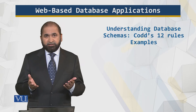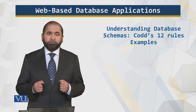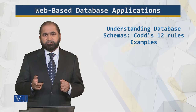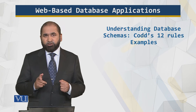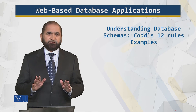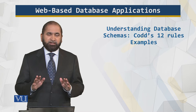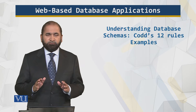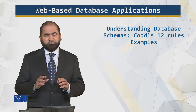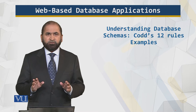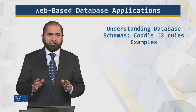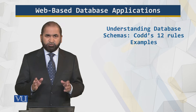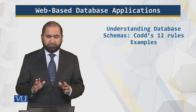In this module I will briefly explain the 12 Codd rules using simple examples. The details are given in the notes. For the simple examples I will only use a very simple table with three rows and about three or four columns, so that you can understand the concept. Once you understand the concept, you can understand the details also.